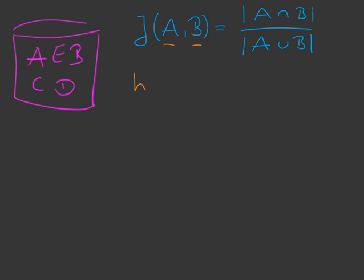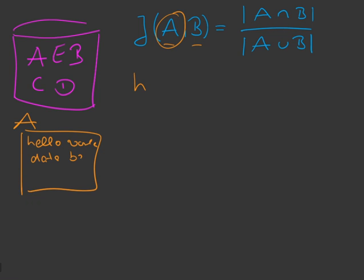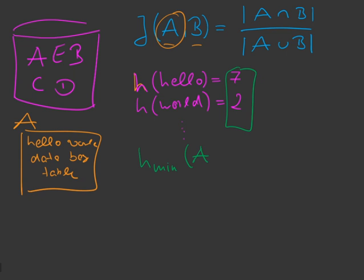If we now look at one specific set, big A, we have a document A with terms in it. We have hello, and world, and data, and base, and table, and so on. What min-hashing is doing is applying the hash function h on each of these terms of document A. So we compute h of hello and let's say we get 7 as output. We apply h on world and get 2, and so on. We look at all these values and remember the smallest. In this case the 2 is the smallest, and we call this h_min of our set A is 2.